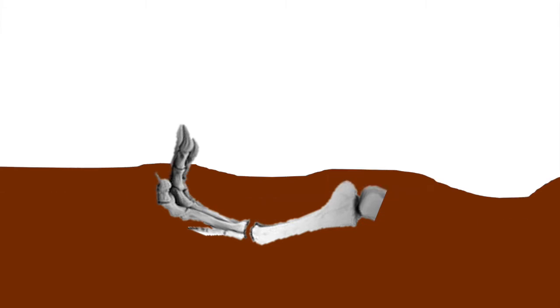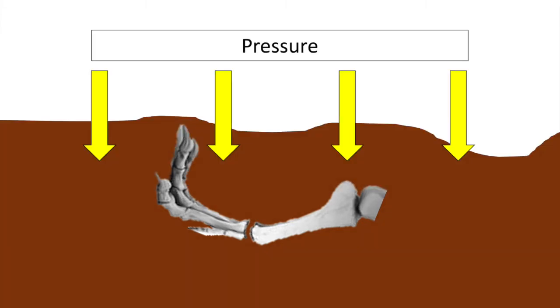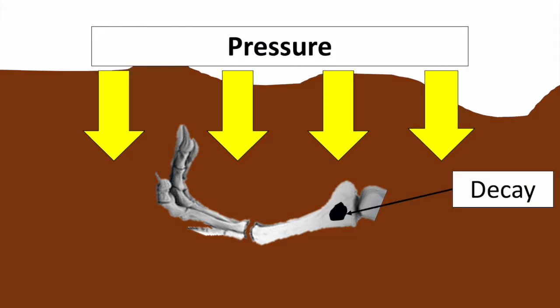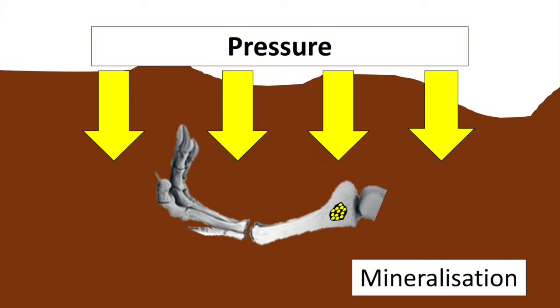Over many, many years, sediment is going to cover the bones. And over many millions of years, as the sediment builds up, the pressure is going to build up and force minerals into the decaying bone. This is an area of decay, and these are the minerals in the sediment. The pressure is going to force the sediment into the bones, which will replace the decayed bone, forming a rock-like fossil.